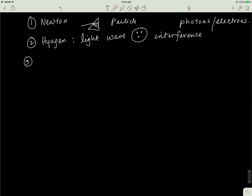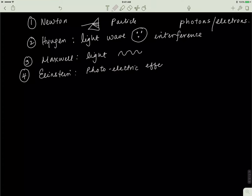Then came along Maxwell, and he too said that light is a wave. So, Maxwell said that light is a wave. Then came Einstein, and Einstein did the photoelectric effect, and basically he concluded that light is a particle.